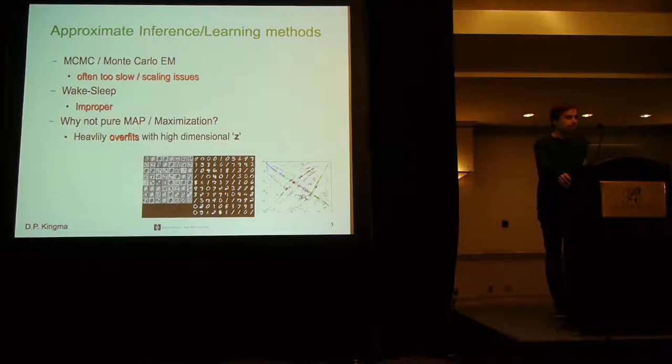Another method is the wake-sleep algorithm. In the wake-sleep algorithm, you learn this approximate posterior over your latent variables using neural nets. However, the problem is that the update for the parameters of this approximate inference network is not appropriate, since it does not optimize the right objective.